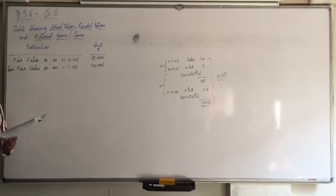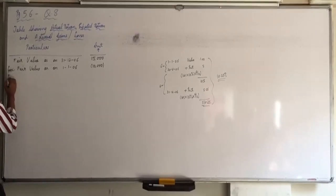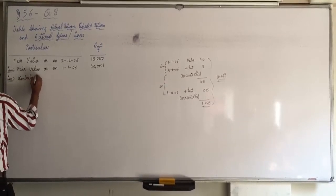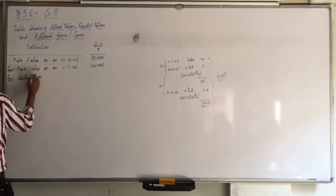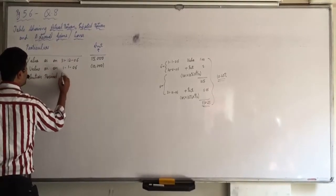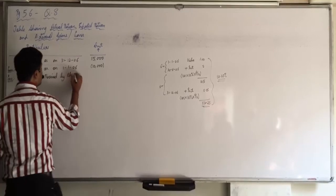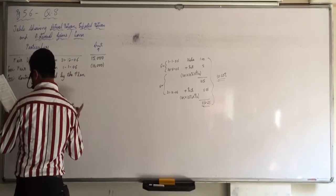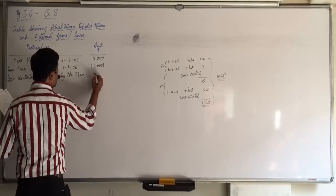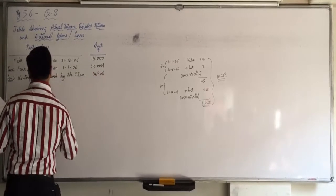Then what do we have to further minus? Contribution received by the plan. What is the contribution received by the plan? 4900. Write it in bracket.